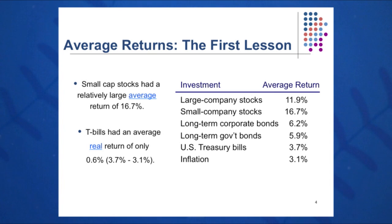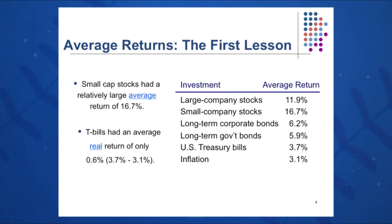We know from Session 7 we can use the Fisher Effect to calculate the real return on these instruments. Real return for large company stocks — I simply subtract the 3.1% to get 8.8%. For small company stocks, the real return was 13.6%, and so on. I got those numbers by taking the average return minus inflation to get the real return as an approximation using the Fisher Effect.